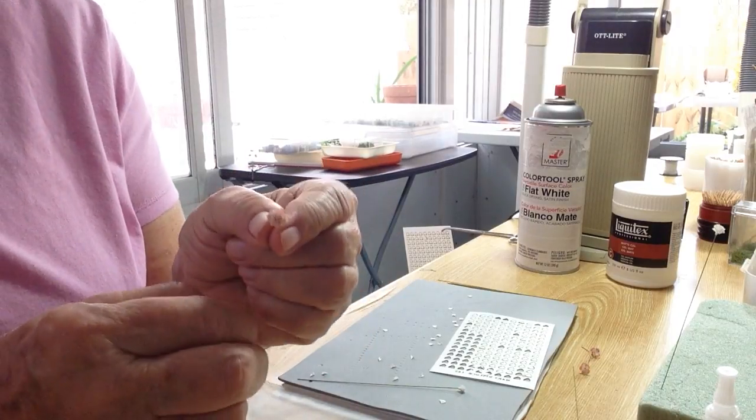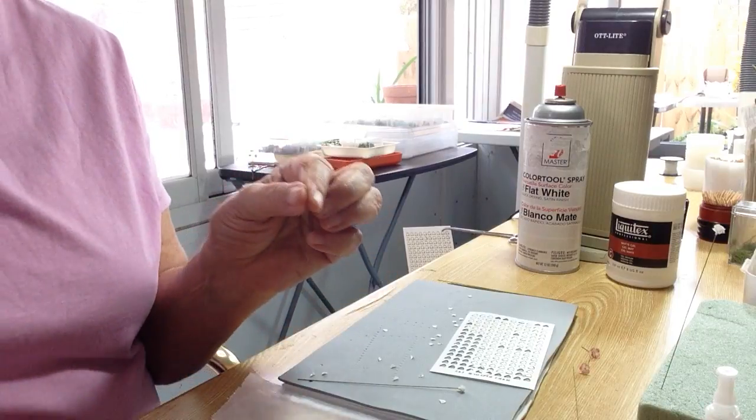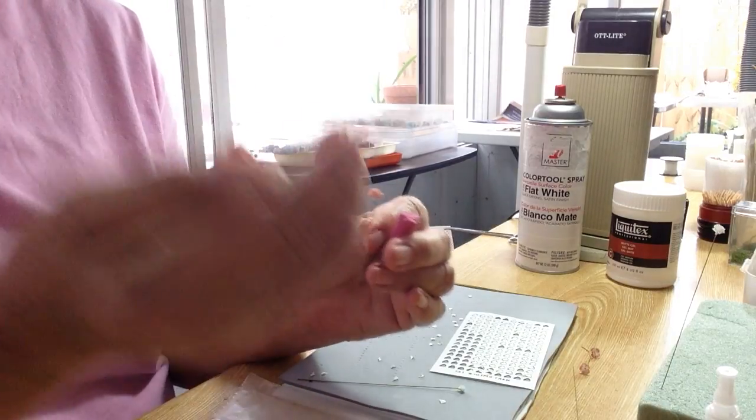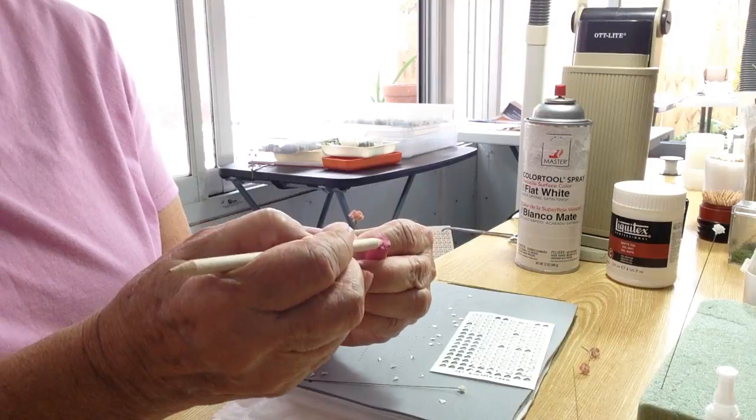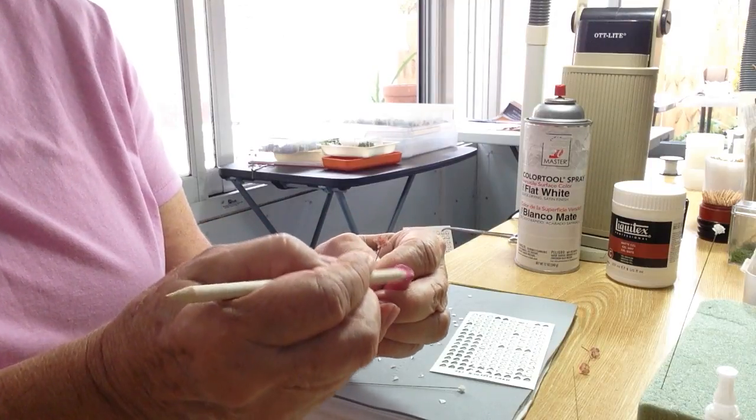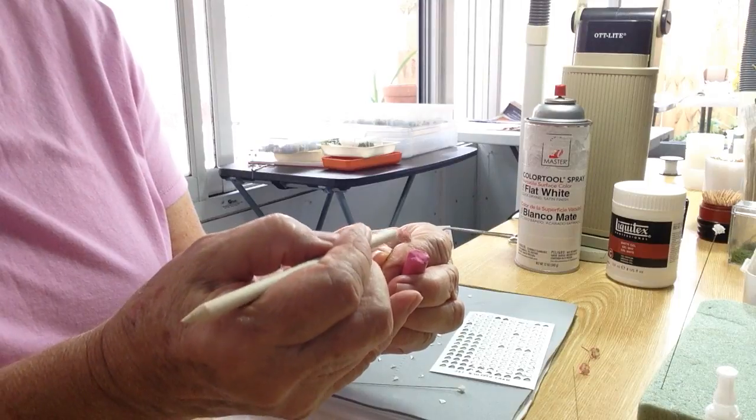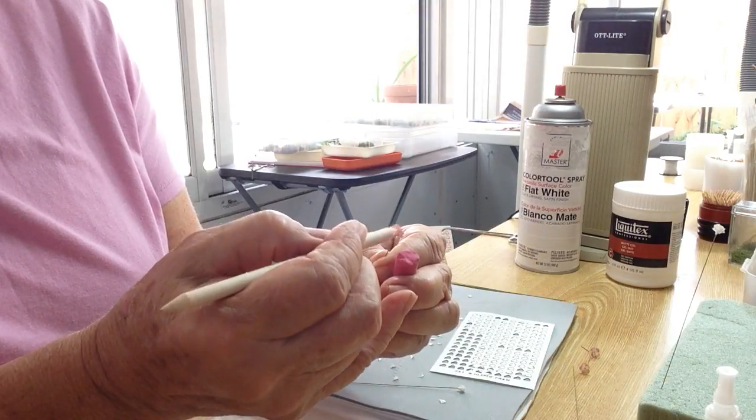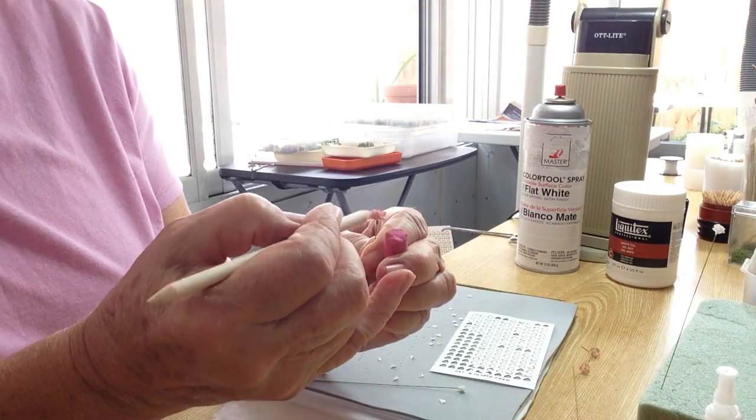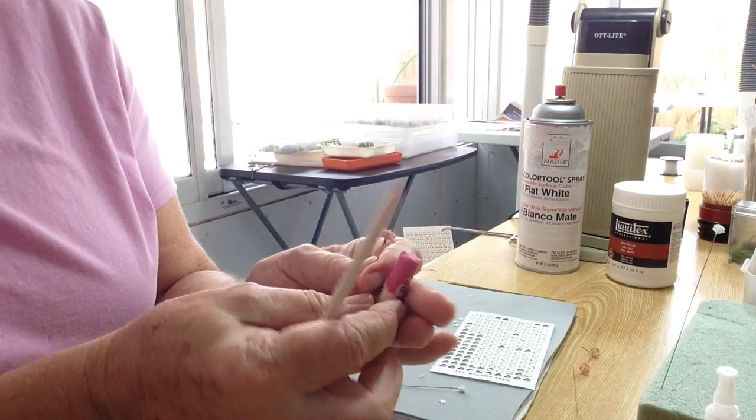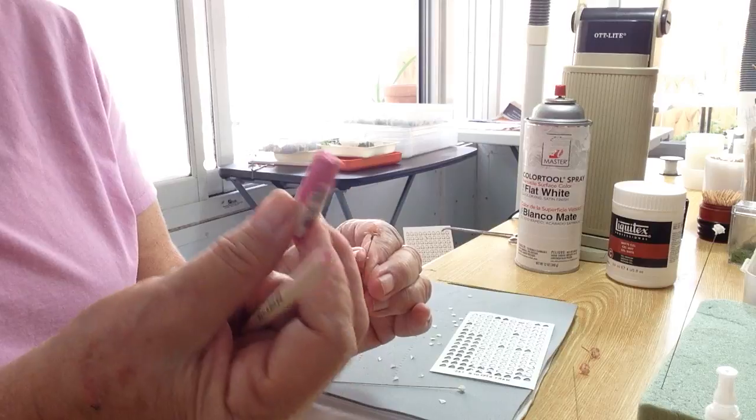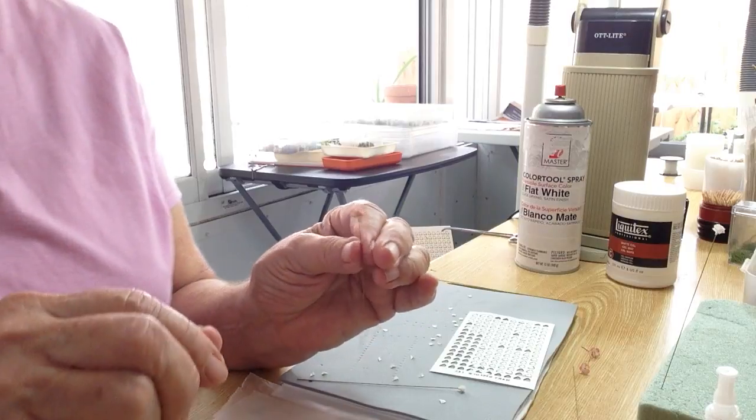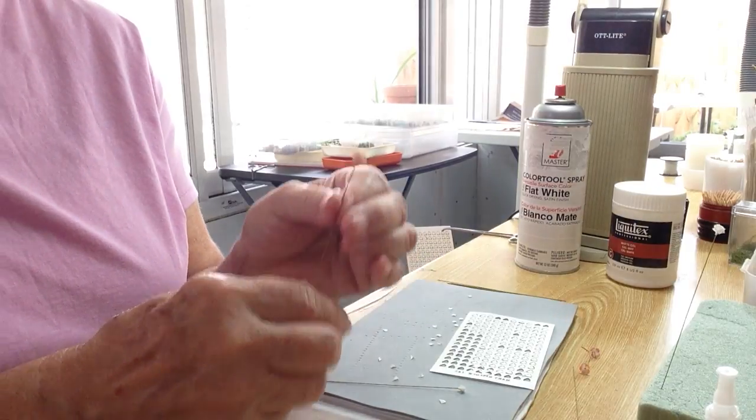The way I got the pink highlights on the flower is I took a pastel and a blending stump, and I just scraped the blending stump on the chalk pastel, and then on the edges of the flower pattern. You just keep doing that until you get the amount of color that you want.